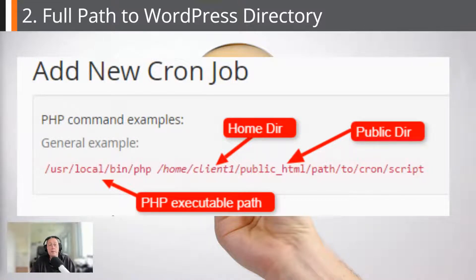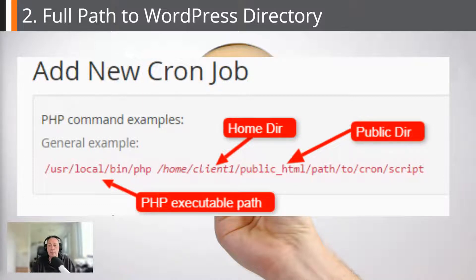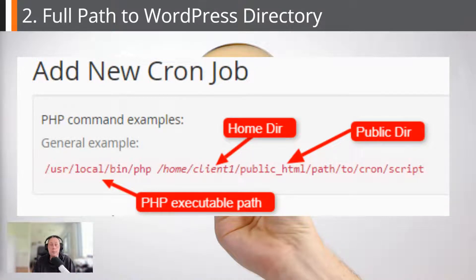cPanel's cron jobs section also shows example paths, including the full path and the public directory where WordPress should be installed. So we have the PHP executable at /usr/local/bin/php, and then example paths like /home/client1/public_html as your home and public directory. There are a few ways to work out where your public_html, var, www, or home public directory is where WordPress is installed. So you need those two bits of information.